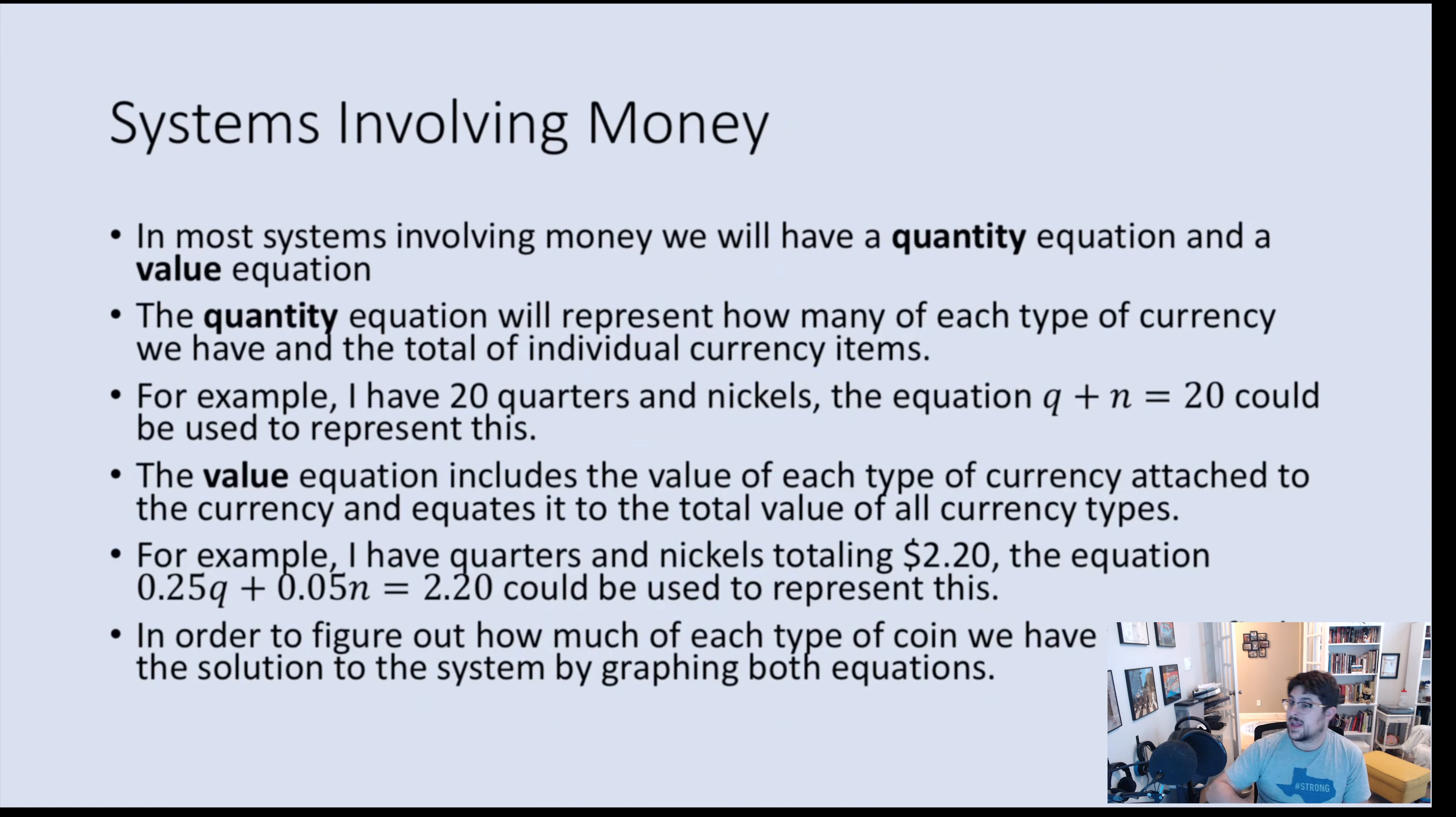For example, if I say I have quarters and nickels and the total amount $2.20. What we should do, we should multiply the number of quarters by how much they're worth, multiply the number of nickels by how much they're worth, and then add those up. So 0.25 quarters plus 0.05 nickels equals $2.20. And this is used to figure out how much of each type of coin we have.